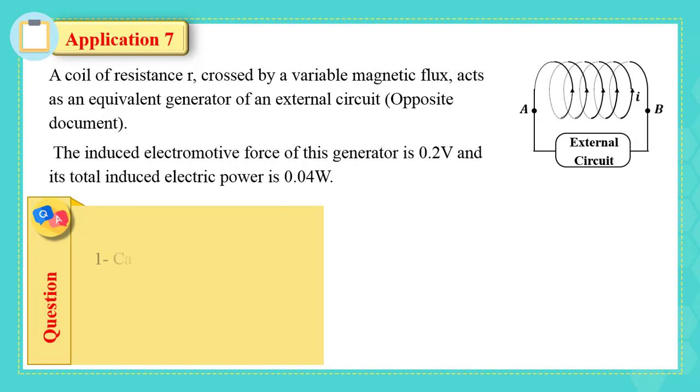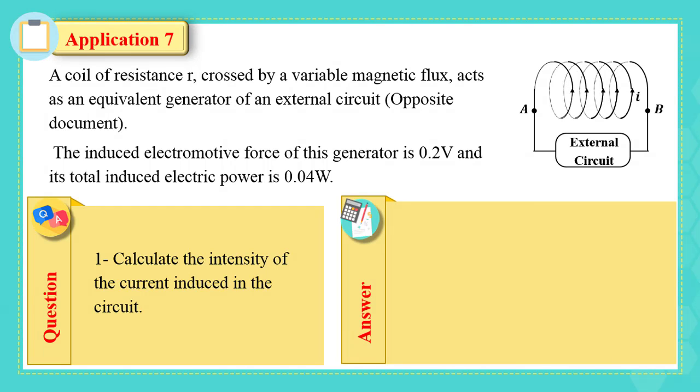1. Calculate the intensity of the current induced in the circuit. P electric equals E multiplied by I. So, I equals P electric over E. I equals 0.04 over 0.2, which equals 0.2 ampere.